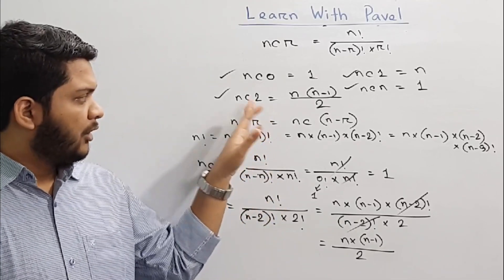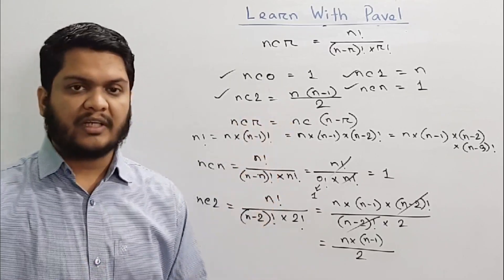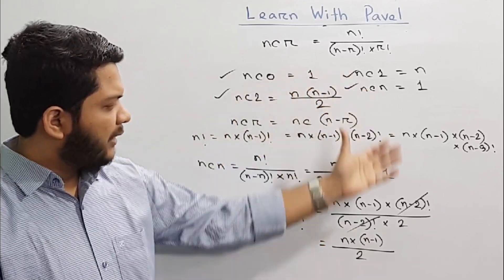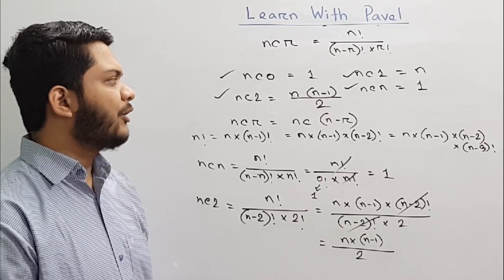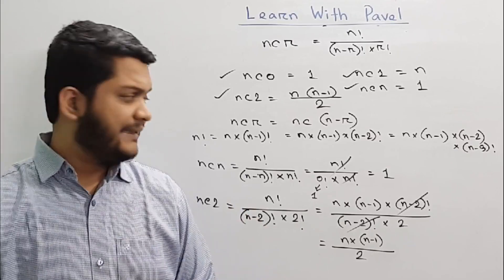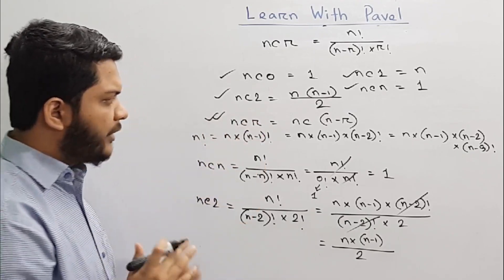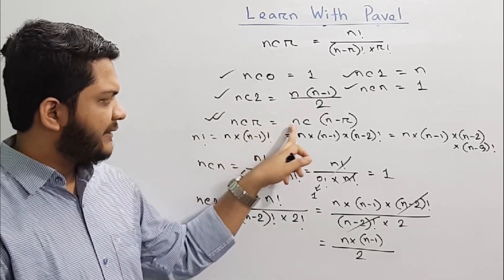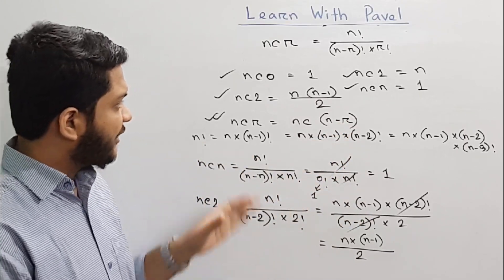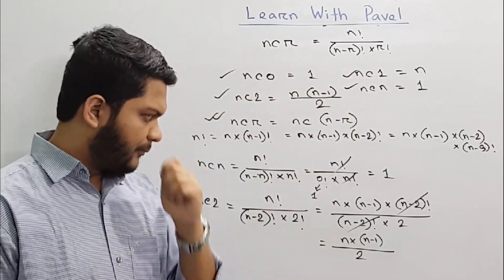We are going to look at n minus 1 factorial which is 2 factorial and n minus 1 factorial. Here a is equal to n minus 1, n minus 1, n minus 2, minus 1, n minus 2, minus 2, minus 3. I will give you the formula — nCr minus n minus 1, n minus 2, minus 2, minus 3, minus 2.